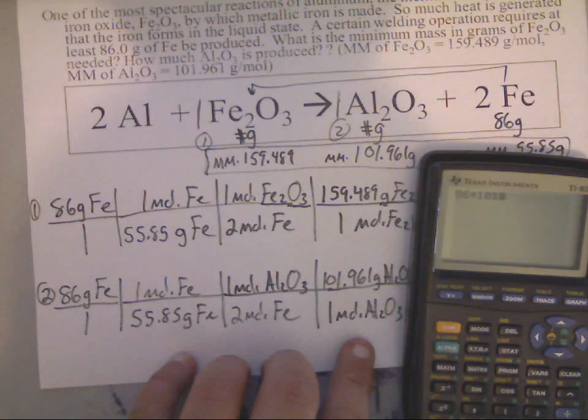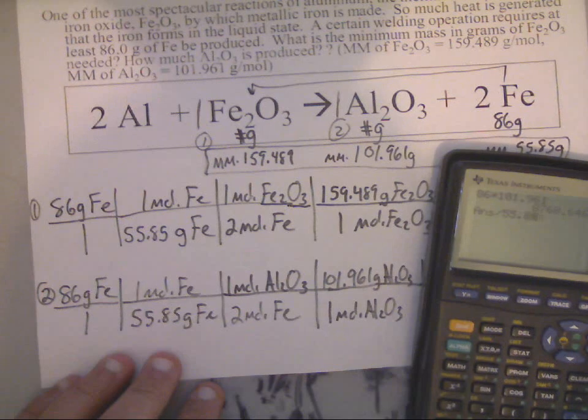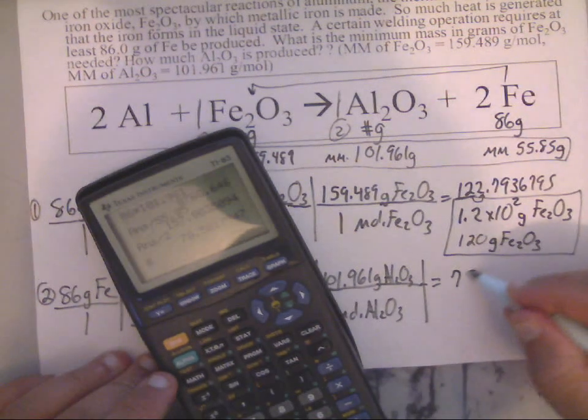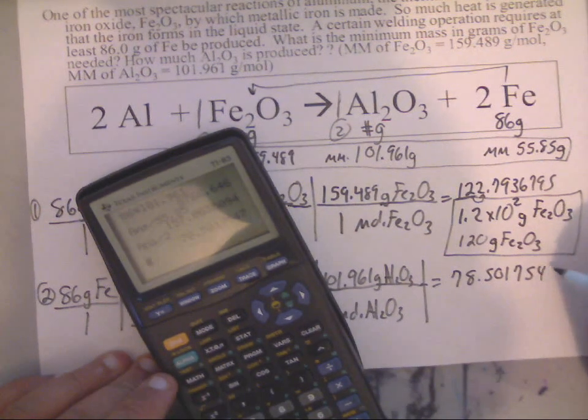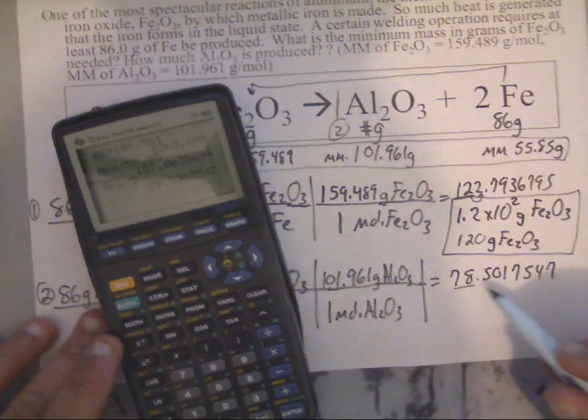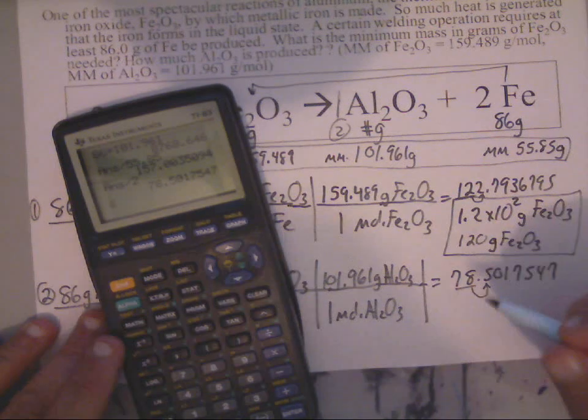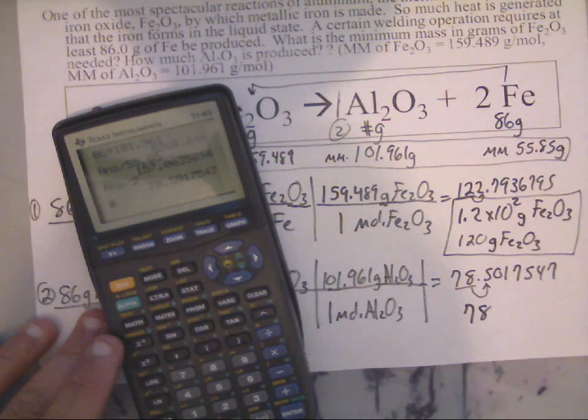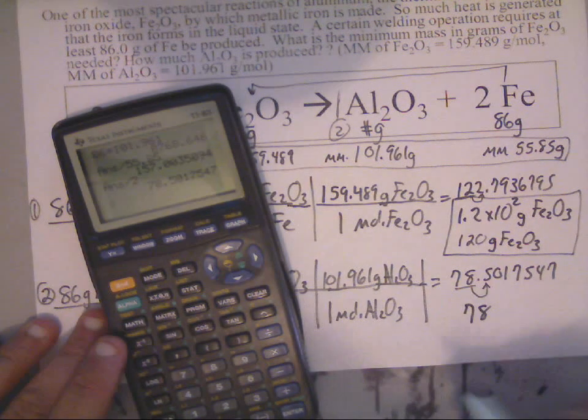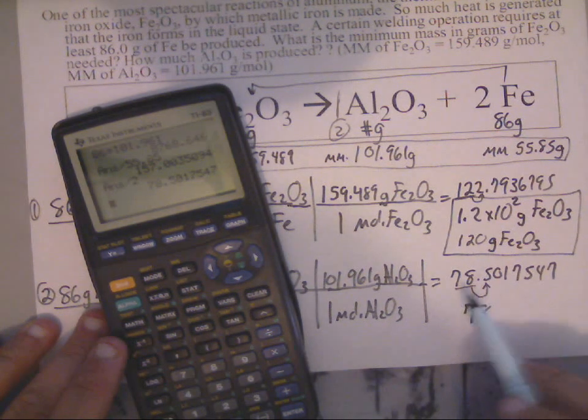We have 86 times 1 times 1 times 101.961 divided by 55.85 and divided by 2, and that gives us 78.5017547. As far as sig figs, we need two sig figs. The 78 will suffice. Look to the right. Remember the sig fig rules of rounding: if the number to the right is a 5 and the number is even, it stays even, so you should really just write 78. If you wrote 79, I would probably just write minus one or something like that.